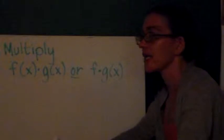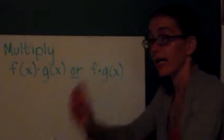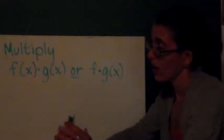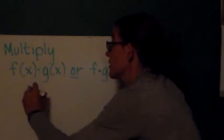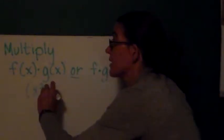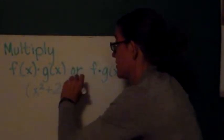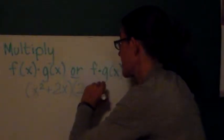Okay, multiplication. We can write f(x) times g(x), or we can write (f·g)(x). Either notation means the same thing. So, working with our same two functions, again, I'm going to write them in parentheses. (x² + 2x) times (2x - 8).